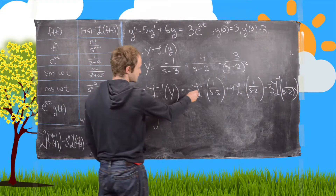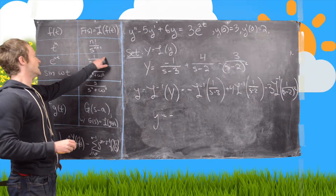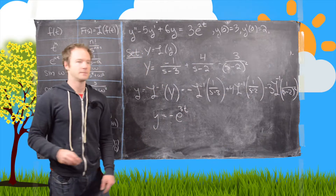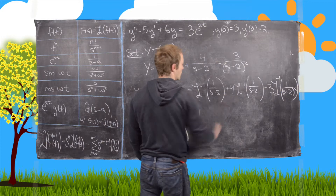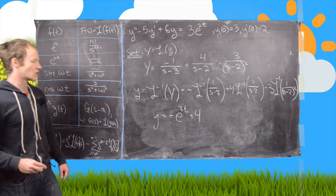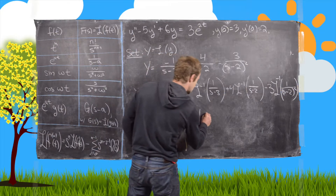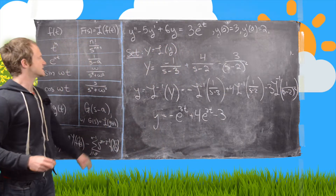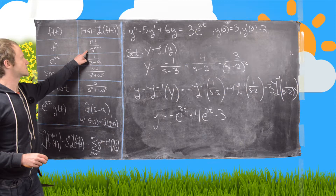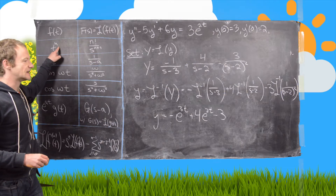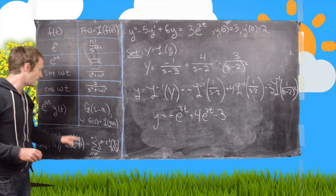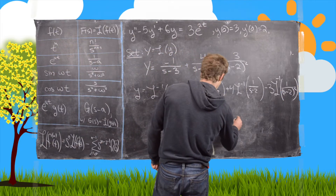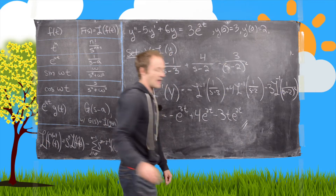Taking each term: the inverse Laplace transform of 1 over s minus 3 looks like the first entry in the chart, giving e to the 3t. Then plus 4 times — again matching the chart — giving e to the 2t. For the last term, minus 3: having s minus 2 squared in the denominator is like having s squared shifted, and using the shifting formula this gives t times e to the 2t. So the final answer is y equals negative e to the 3t plus 4 e to the 2t minus 3t e to the 2t.